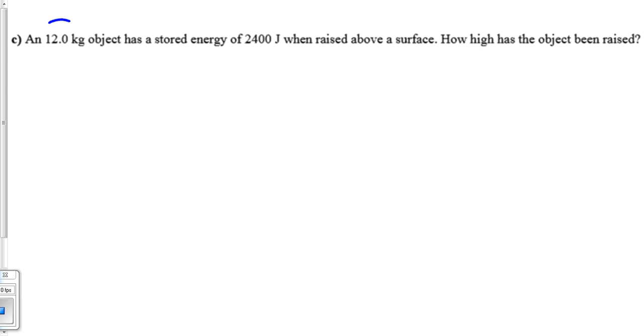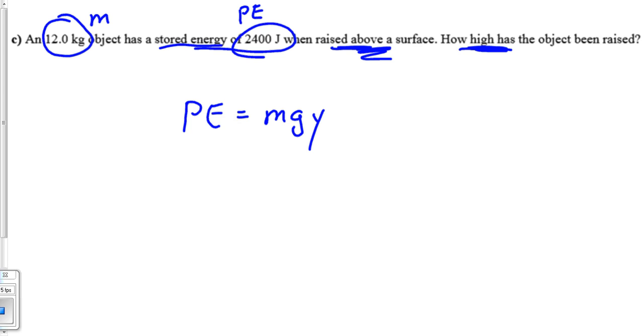Last question. 12-kilogram object has a stored energy of 2,400 joules when raised above a surface. Which potential energy equation are we going to use? M-G-Y or 1 half K X square? Well, it says how high, so that means we're going to use PE equals M-G-Y. Let's look at what the problem gave us. It gave us 12 kilograms, so that's a mass. And then it says a stored energy, a potential energy of 2,400. How high?